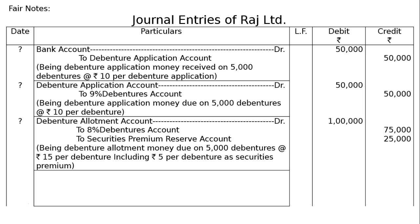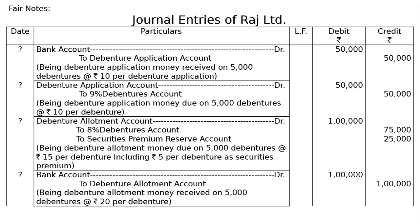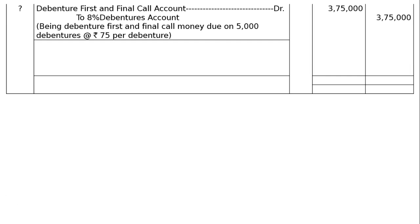The next entry is the receipt of debenture allotment money — a simple entry: Bank Account debited to Debenture Allotment Account, being debenture allotment money received on 5,000 debentures at Rs.20 per debenture, that is Rs.1,00,000. Rs.1,00,000 in both the debit and credit columns.